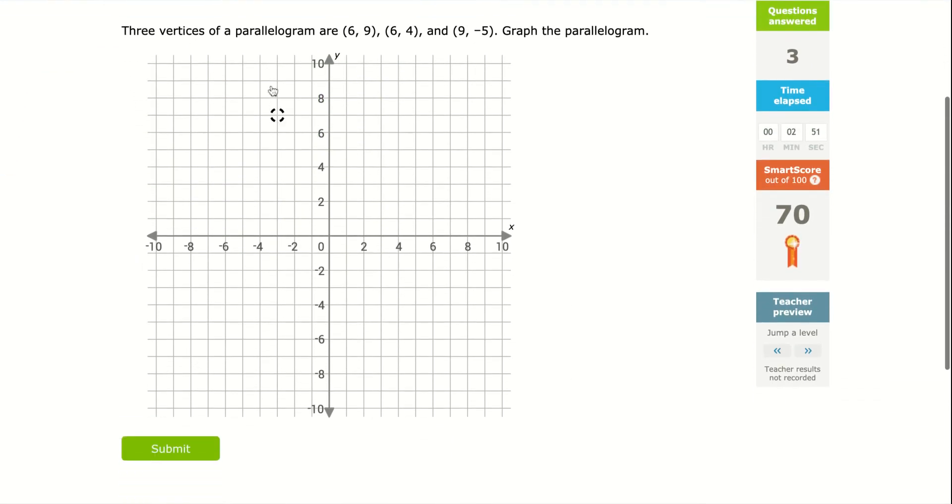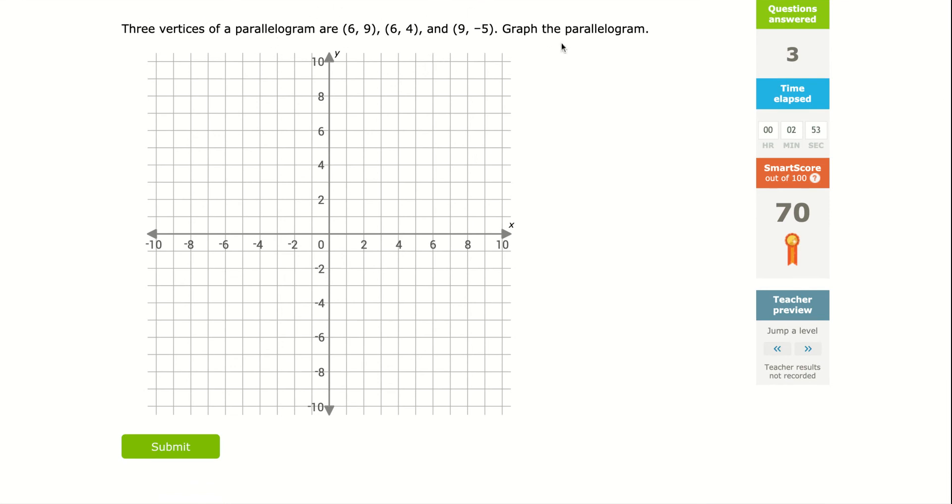Here we go. Here's a parallelogram and they only give us three vertices, but it should be easy to graph the last vertices because it's a parallelogram. I'm going to go to (6, 9), over six, up nine. I'm going to go to (6, 4). So over six, up four. Then I'm going to go to (9, -5). So I'm going to go way out here to nine, down here to negative five, which is right there. Now I need a parallelogram.